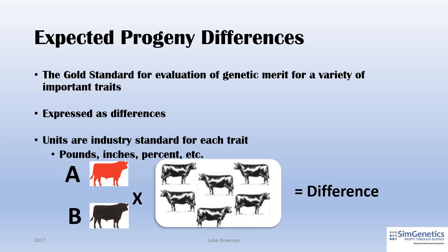Expected progeny differences are the gold standard in the beef industry by which we can evaluate the genetic makeup for a variety of important traits. EPDs are expressed as expected phenotypic differences in future calves of a particular animal, allowing for comparison of genetic merit expressed in units such as pounds, inches, percentage, etc. If Bull A and Bull B are randomly mated to the same set of cows and then phenotypes like birth weight, yearling weight, ultrasound ribeye area, etc. are collected on the resulting calves, we would expect the calves from the two sires to perform differently for various traits. These differences are input into a complex formula along with other information about the ancestry of the animal to calculate EPDs.